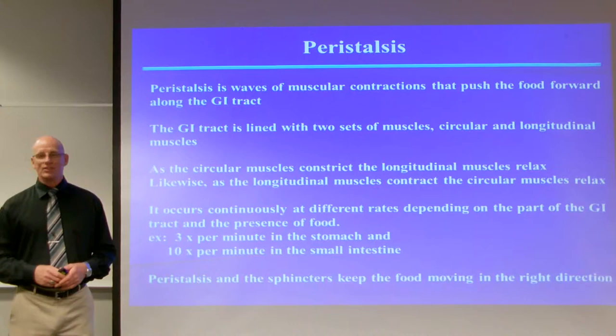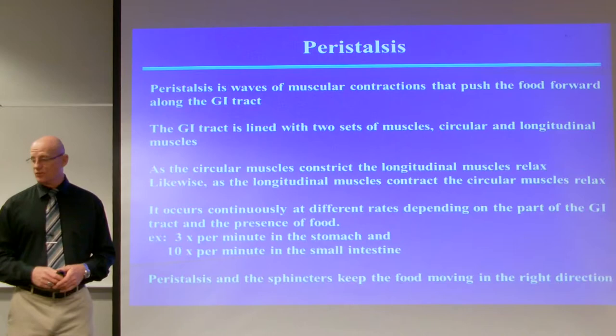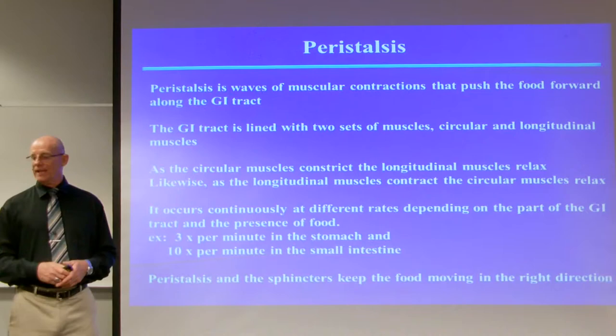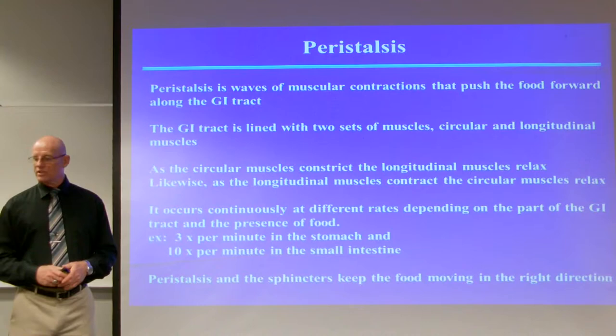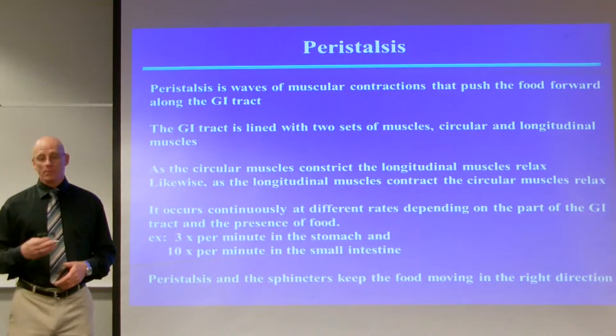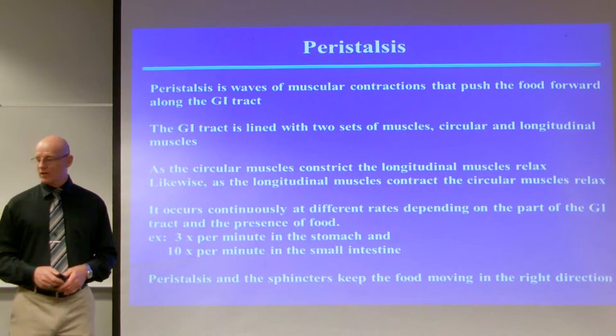Peristalsis is waves of muscular contractions that push food forward along the GI tract from the esophagus all the way to the anus. The GI tract is lined with two sets of muscles — circular and longitudinal — except the stomach which has three. As the circular muscles contract, the longitudinal muscles relax, and vice versa — that is the process of pushing food forward. It occurs continuously at different rates; for example, peristalsis goes three times per minute in the stomach and ten times per minute through the small intestine.